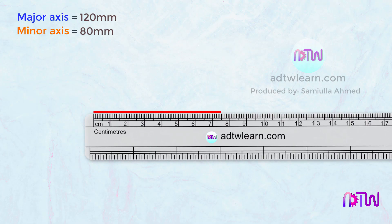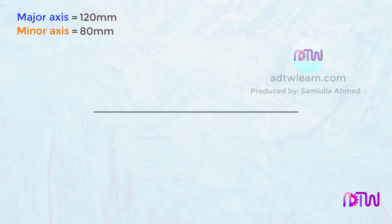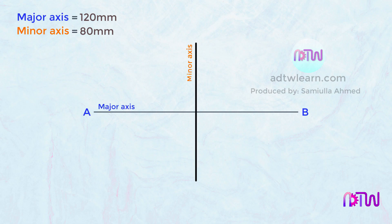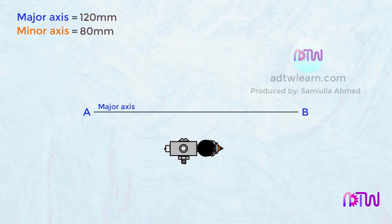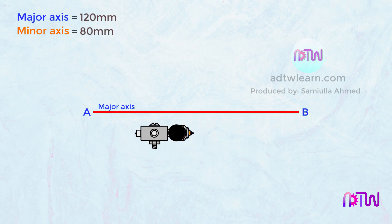First, draw a horizontal line of 120 millimeters in length and name this line as A and B. After this, we need to draw the minor axis at the center of this line. To do so, divide this line into two halves. Take a compass and take a length of more than half of this line.